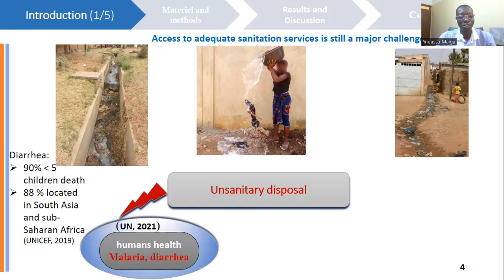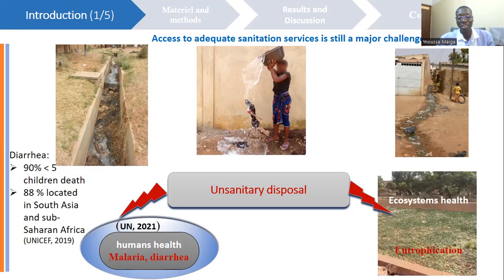For example, in low and middle income countries, diarrhea is responsible for up to 90% of under-five children's deaths, from which 88% are located in South Asia and in Sub-Saharan Africa. This unsanitary disposal of wastewater is also responsible for the eutrophication of freshwater resources due to the presence of nutrients in wastewater.